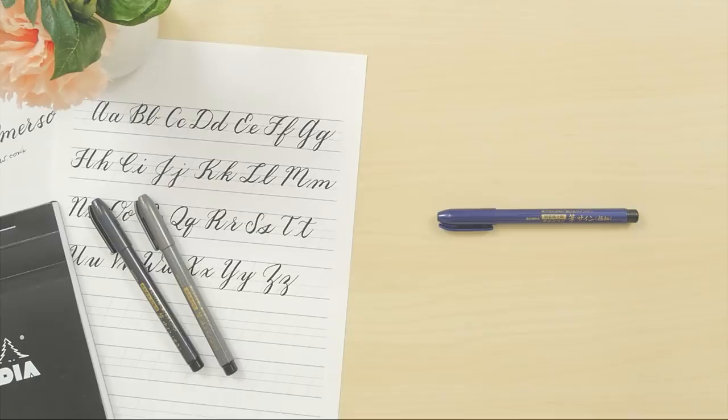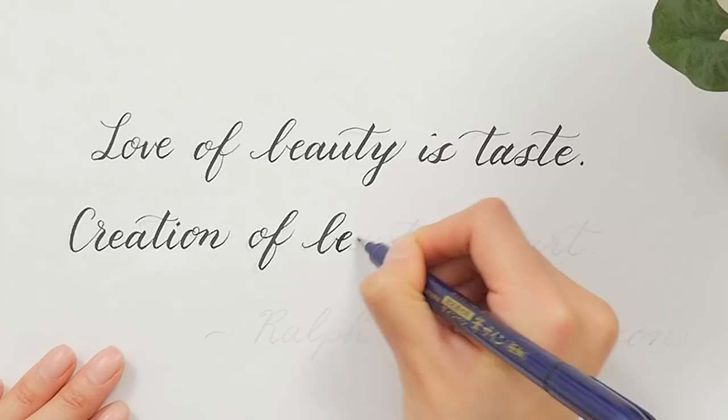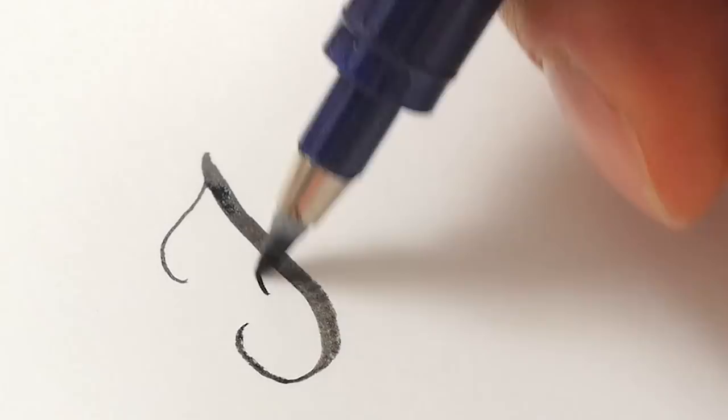The Zebra Disposable Brush Pen is an excellent pen for lettering. It has a firm felt tip that gives you complete control over your writing and allows for line variation depending on the amount of pressure that you apply.